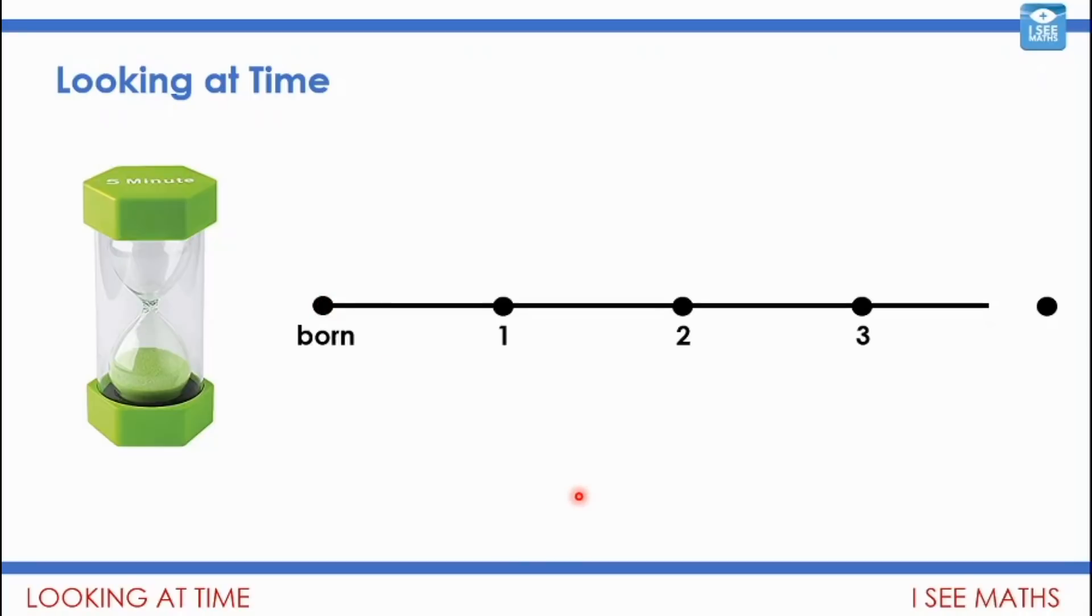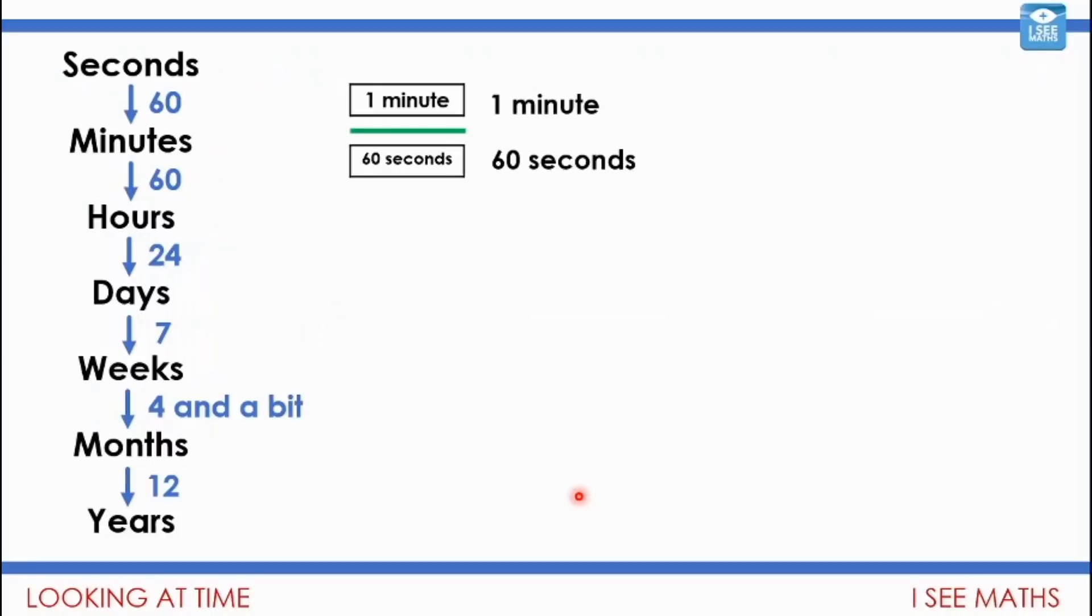We've got these different measures for time: seconds, minutes, hours, days, weeks, months, and years. 60 seconds in a minute, 60 minutes in an hour, 24 hours in a day, seven days in a week. Weeks to months is unusual because there's four and a little bit weeks in a month, then 12 months in a year. Have a look at this green line—this green line represents one minute but it also represents 60 seconds. It's the same length of time, just different ways of saying it.